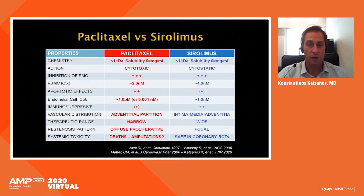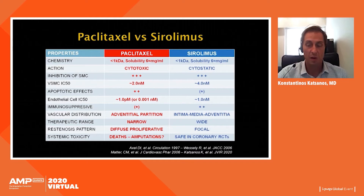There are also differences in terms of pharmacological properties. The IC50 in terms of action in vascular smooth muscle cells is very similar between the two agents, between two and four nanomolar. However, in terms of IC50 for endothelial cell action, there are several orders of magnitude difference — one picomolar for paclitaxel versus one nanomolar for sirolimus, showing paclitaxel has very high effectiveness on endothelial cell proliferation.